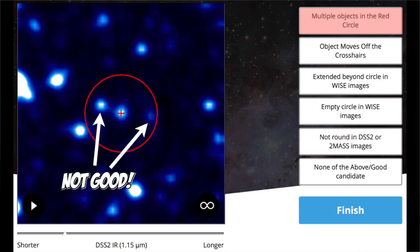Those objects inside the red circle could contaminate the images, tricking us into thinking we're seeing a planetary system when we're just seeing multiple objects. So we keep a special lookout for multiple objects in the red circle. We also look out for objects that are extended beyond the circle and objects that shift around during the video.